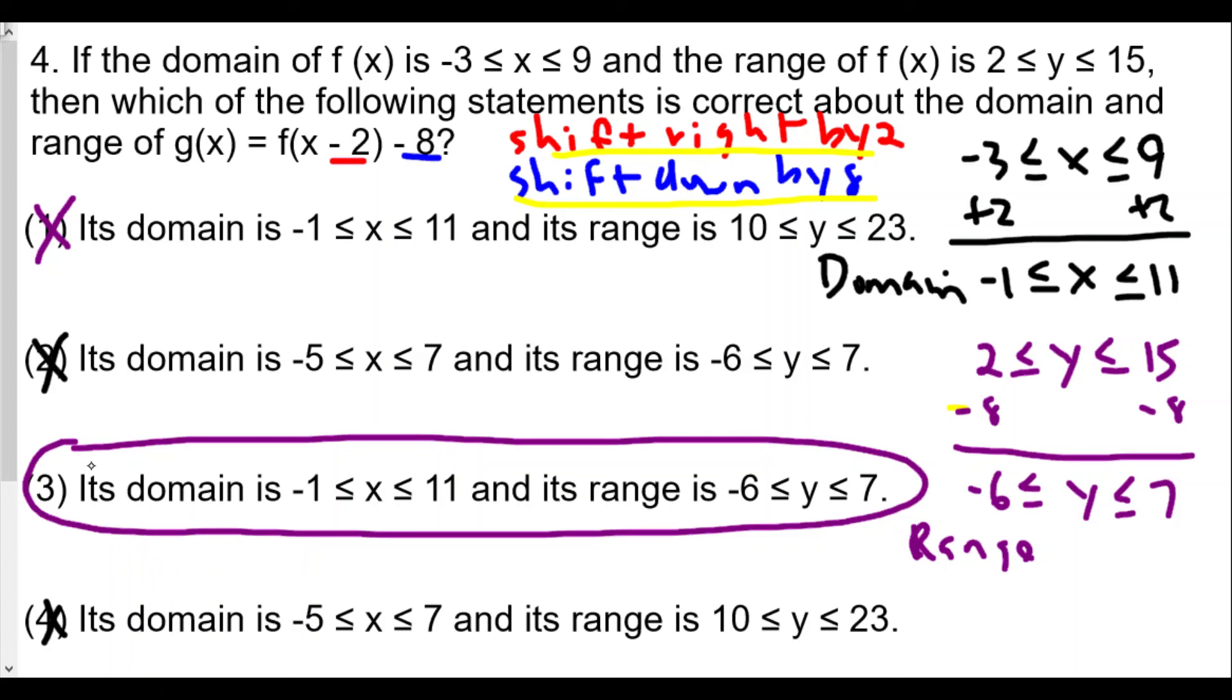That's how we find our domain and range after we shift the function from its original domain and range. We don't even need to know the function itself, but we know the translation performed on the function, so the translation applies to the domain and range as well.